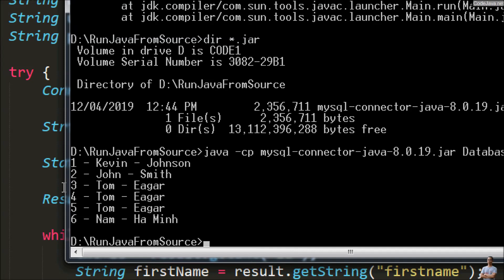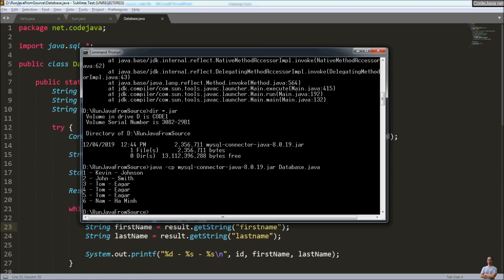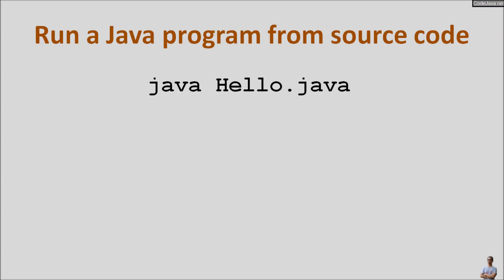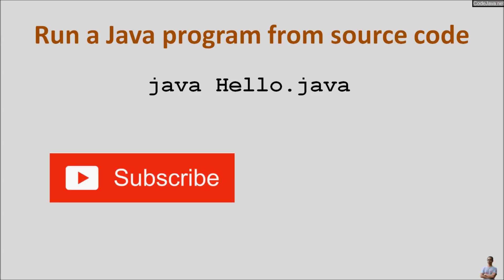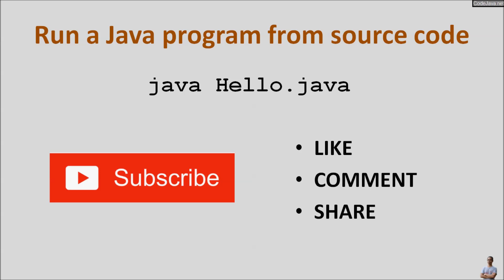You can see it now prints the rows from the database successfully. So you have learned how to run a Java program directly from source file using the Java command followed by the source file name. Please subscribe to my channel, like, comment, and share this video. Thank you.